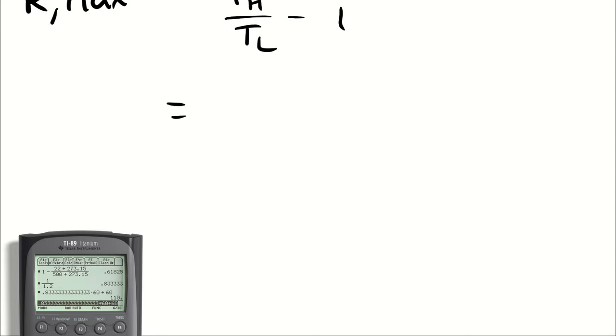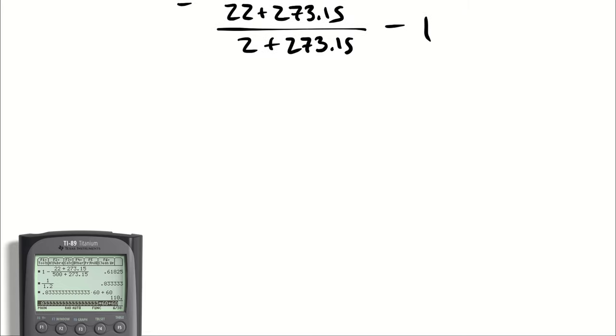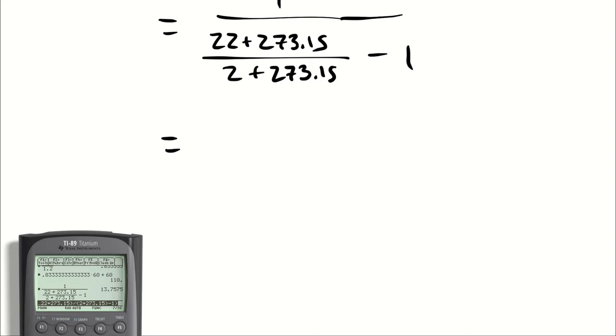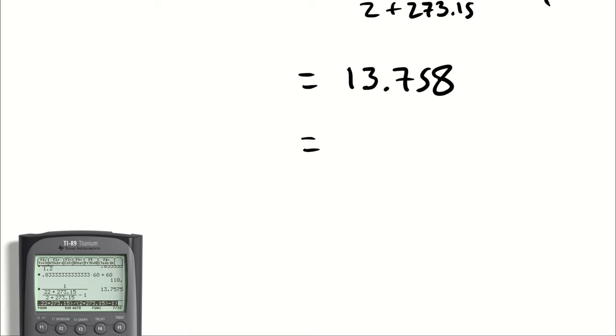So we're plugging in 22 degrees Celsius for T_H. Again, we have to convert that to Kelvin. And 2 degrees Celsius for the refrigerated space. And we get a theoretical maximum of 13.75. So the theoretical maximum coefficient of performance that could occur if a perfect device were operating between these two temperatures is 13.758.